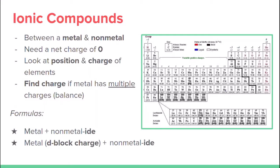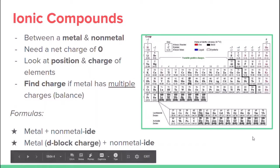We're looking at the position and charge of the element — position meaning where it is, like as a metal or non-metal, and charge meaning what charge it carries. If it's a d-block element, we find its charge by balancing it with the non-metal it interacts with.